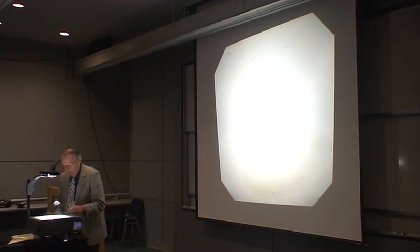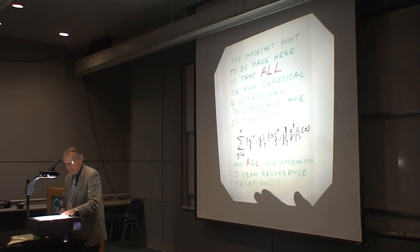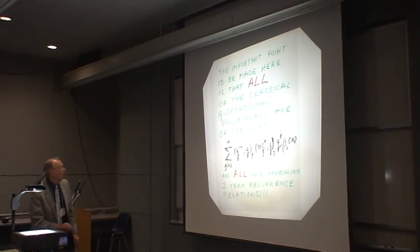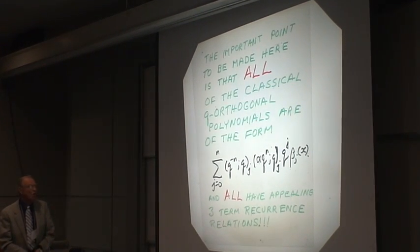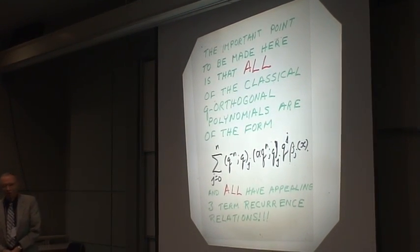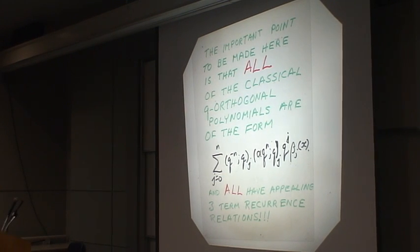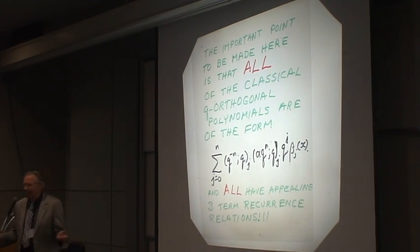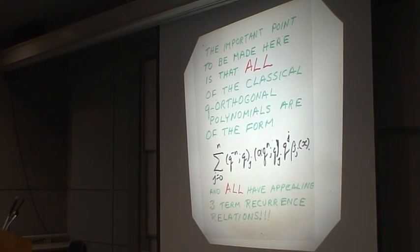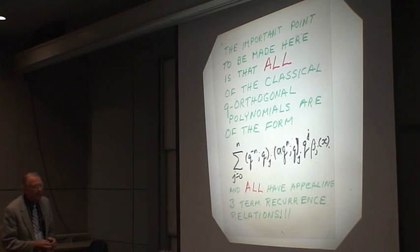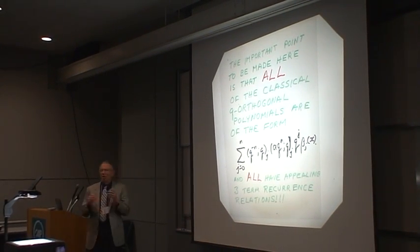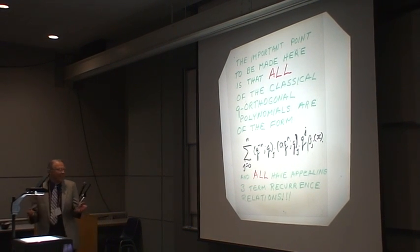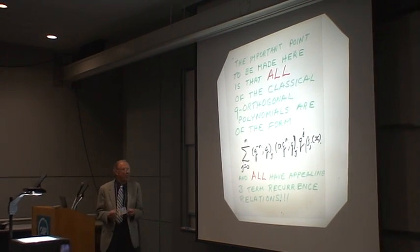The important point to be made here is that all the classical q-orthogonal polynomials are of this form. All have, by necessity from the theory of orthogonal polynomials, three-term recurrence relations. The theory doesn't guarantee this in general, but it turns out in practice.